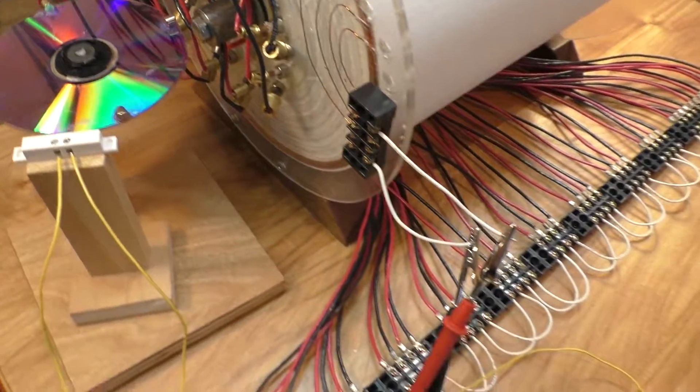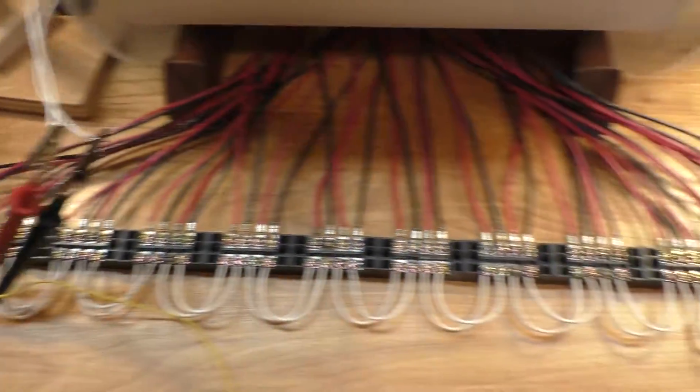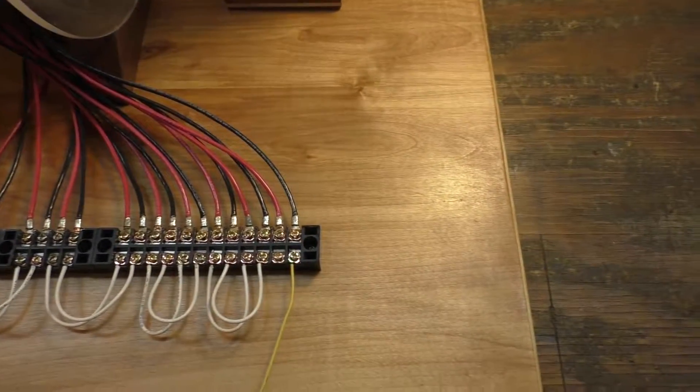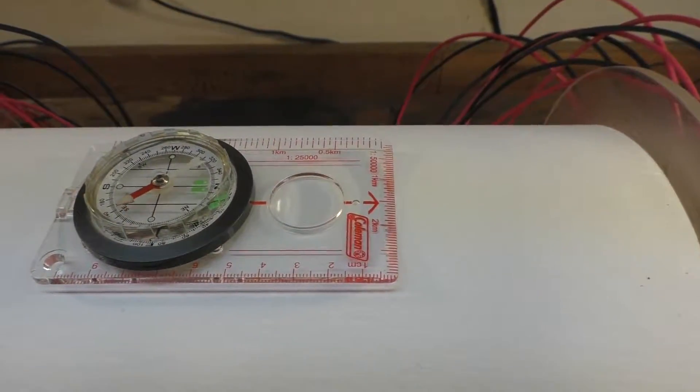Reed switch comes down and shorts out the positive and negative terminals of the battery. And there is a compass moving right there.